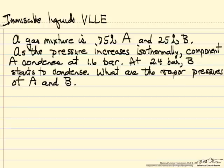Then as we increase the pressure, we start to condense, and component A condenses first. We can have just one component condense because the liquid phases are immiscible. Component A condenses when the total pressure is 1.6 bar, and when the total pressure is 2.4 bar, component B starts condensing.